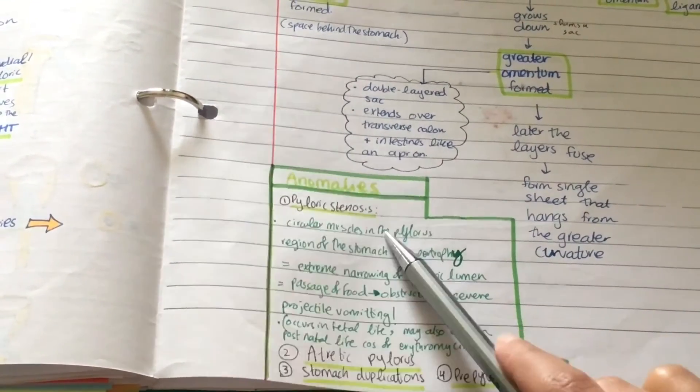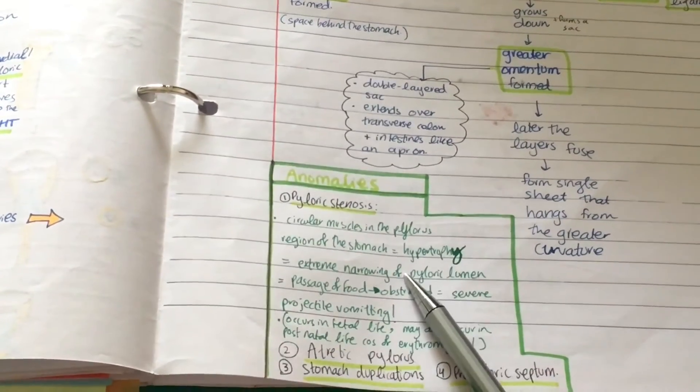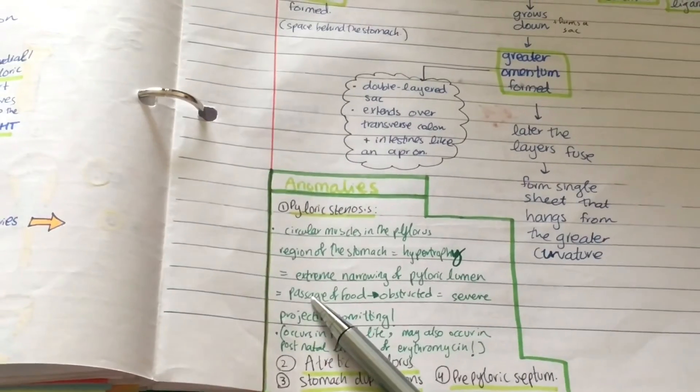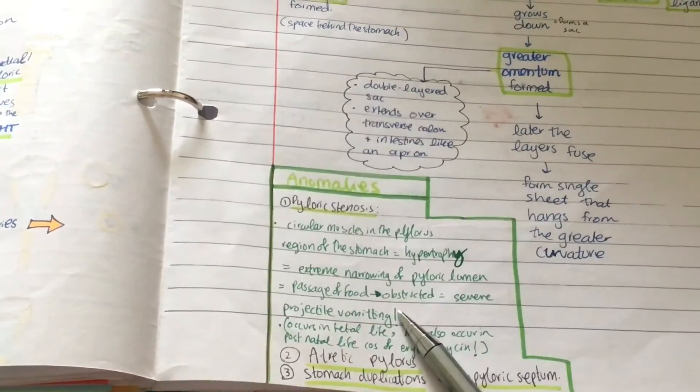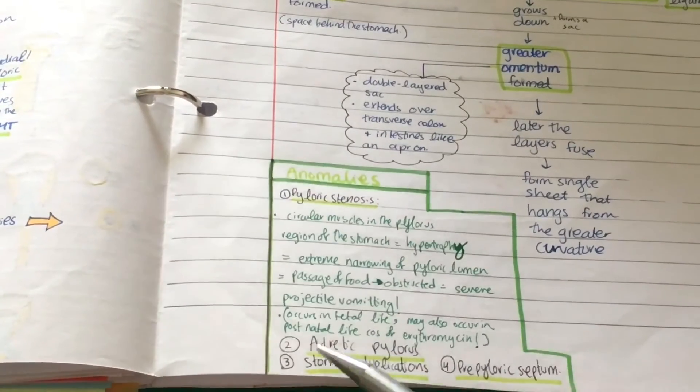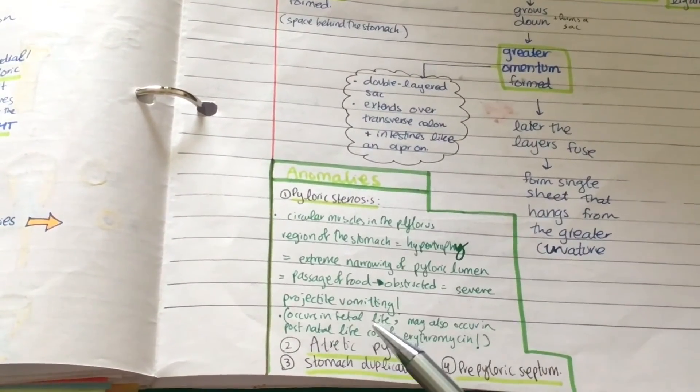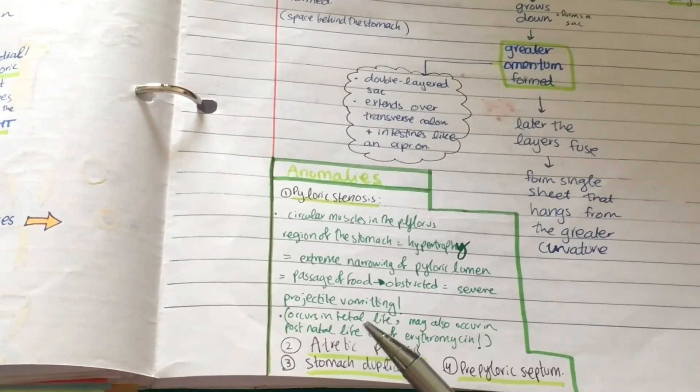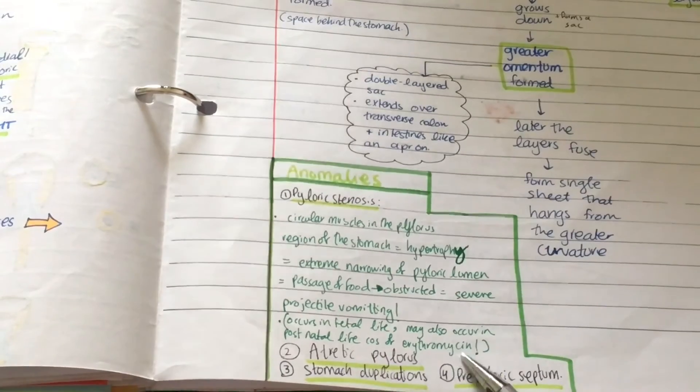In pyloric stenosis, the circular muscles in the pylorus region of the stomach undergo hypertrophy, which causes extreme narrowing of the pyloric lumen. This obstructs the passage of food which leads to severe projectile vomiting. This occurs in fetal life but it may also occur in postnatal life because of erythromycin.